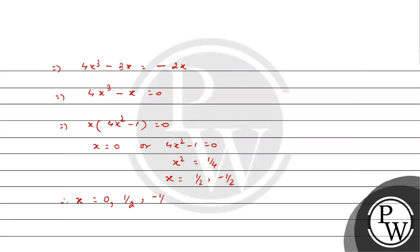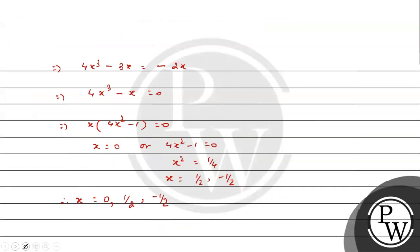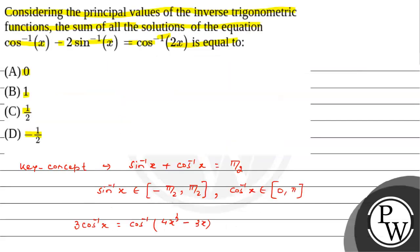We have to find the sum of all the solutions. Therefore, sum = 0 + 1/2 + (-1/2) = 0. The sum of all solutions of the given equation is equal to 0, which is option A. This is the final answer. Hope you understood it well. Best of luck!